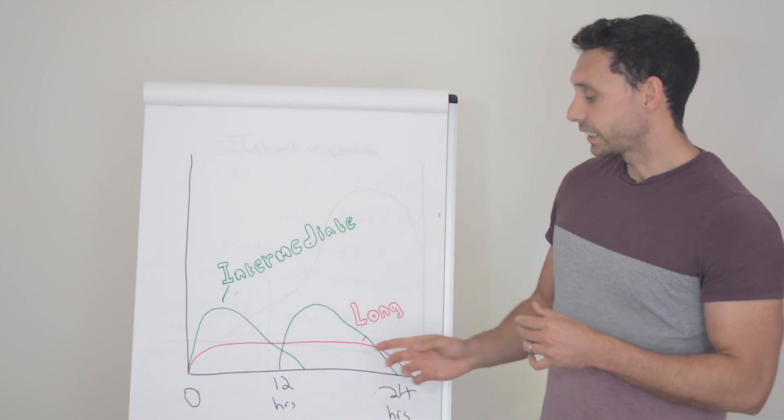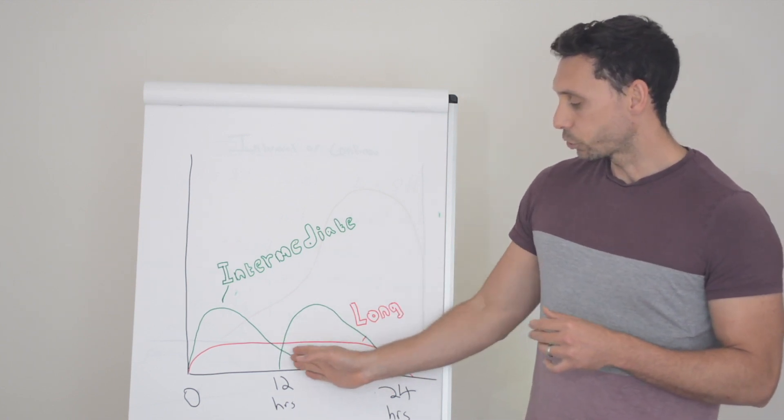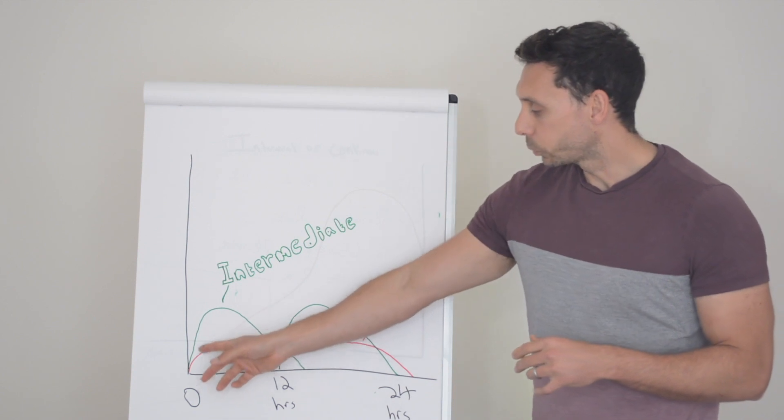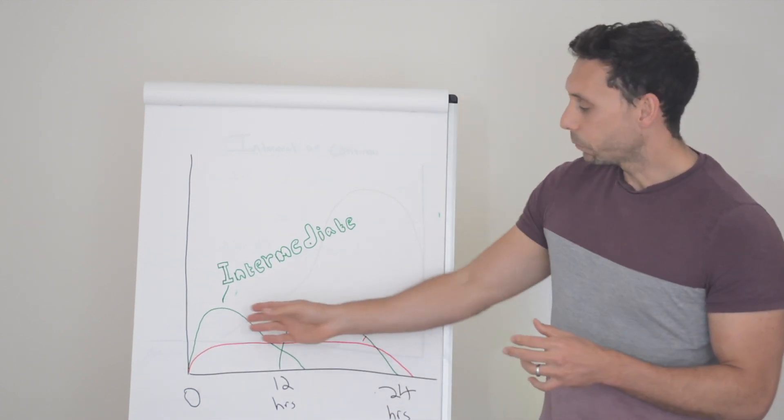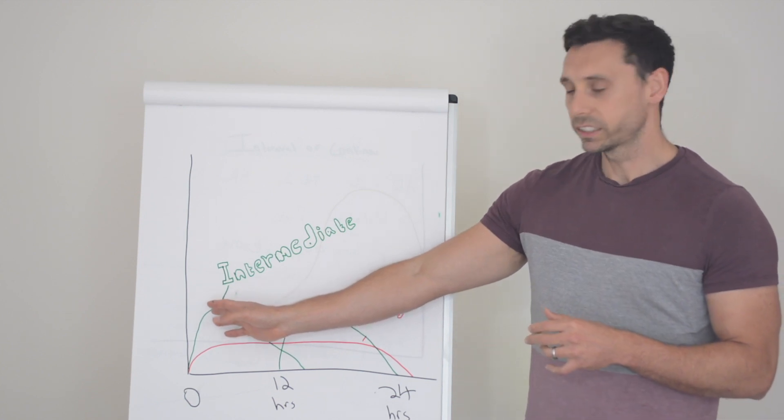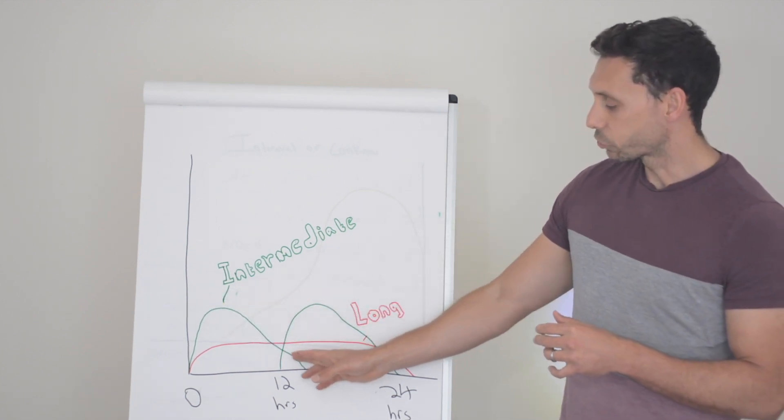Whereas intermediate acting insulins, because they last for a shorter duration per unit, you end up with squeezing the amount that is seen at any given time. So you tend to get more of a peak when you initially administer this and then the insulin tends to drop off over time.